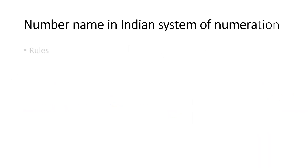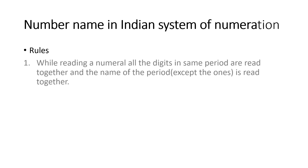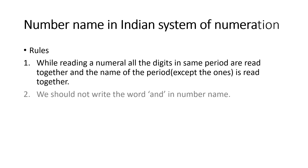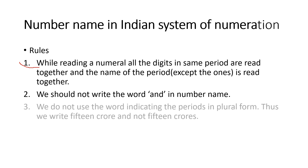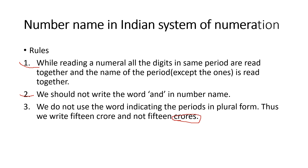Now let's study how we write number names in the Indian system of numeration. While reading a numeral, all the digits in the same period are read together, and the name of the period is read with them. We should not write the word 'and' in a number name. Also, we do not use period names in plural form. Thus, we write '15 crore' and not '15 crores'. 15 crores is wrong; 15 crore is right.